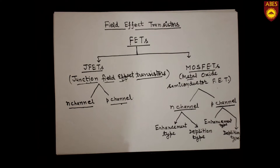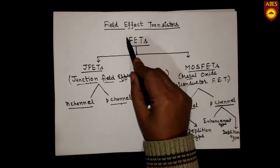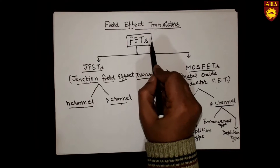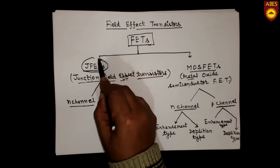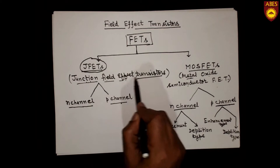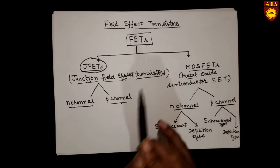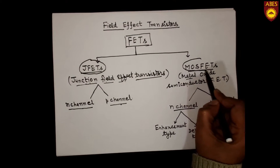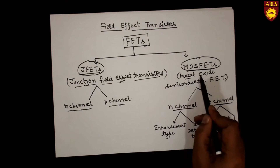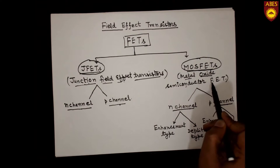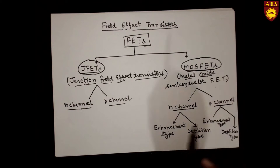Now, talking about the classification of field effect transistors: FETs can be broadly classified as JFETs — junction field effect transistors — and MOSFETs — metal oxide semiconductor field effect transistors.